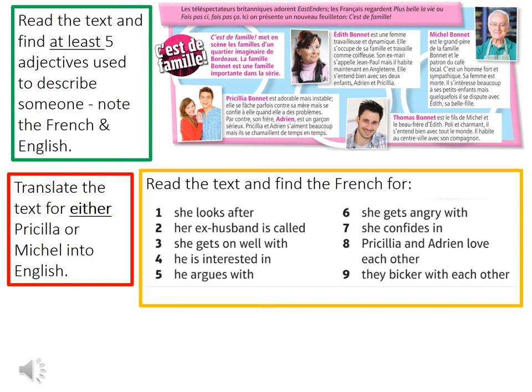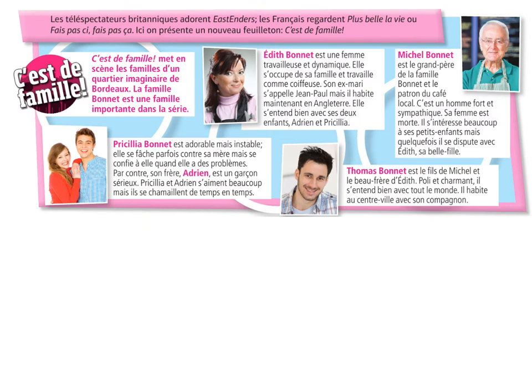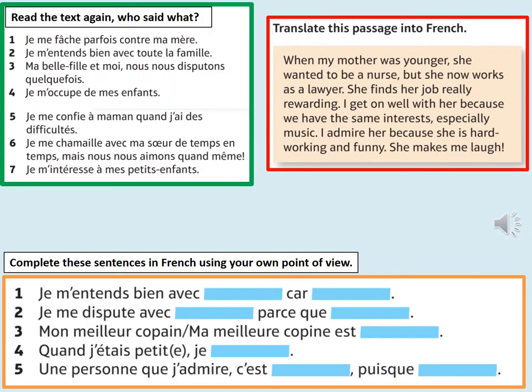Give yourselves around seven to eight minutes — good luck. Working with the same text, I would then like you to look at the statements in the green box, which are in French, and tell me who said each one. All you need to do is write down the number of the phrase and the name of the person.